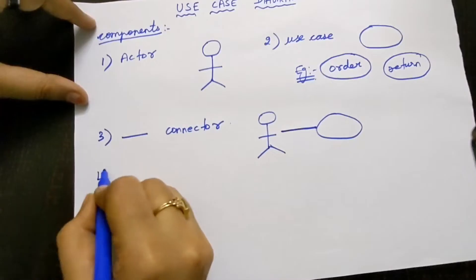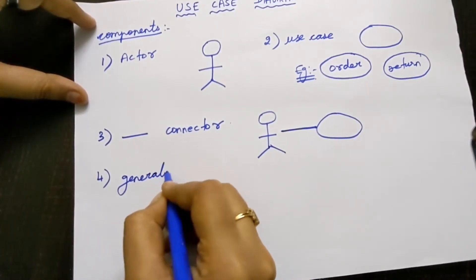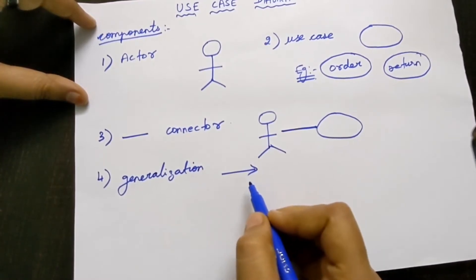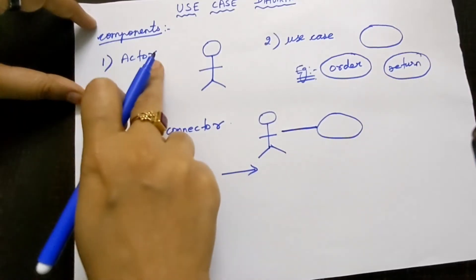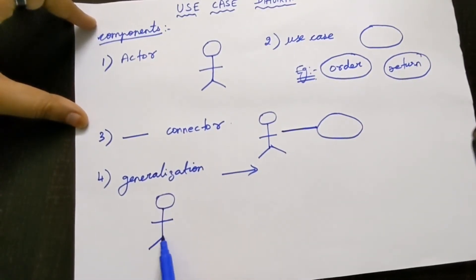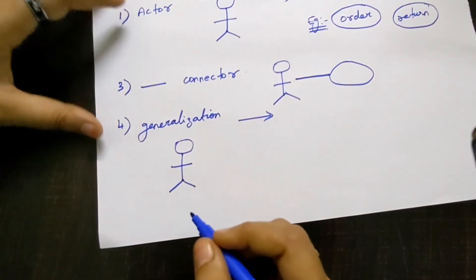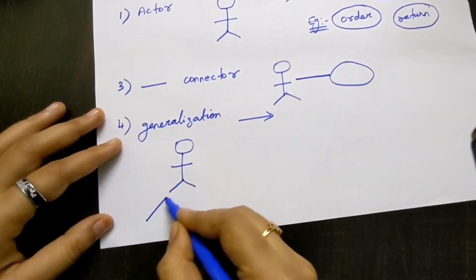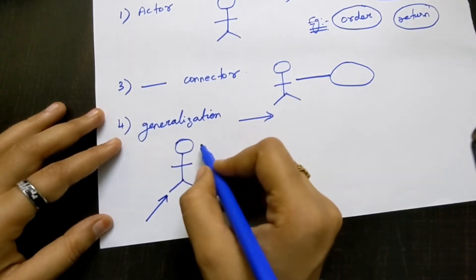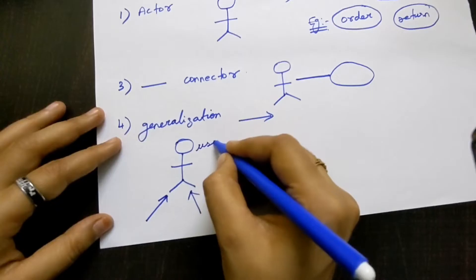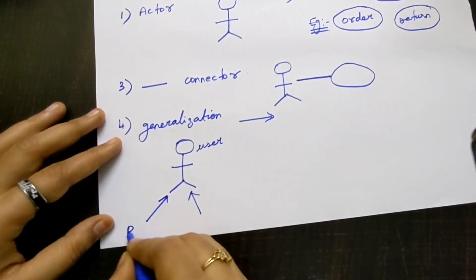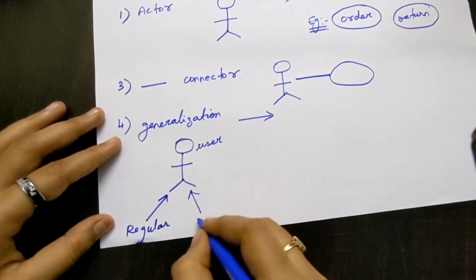The next component is generalization. The symbol for this is a one-sided arrow mark. Generalization means you want to divide an actor further. For example, if the actor is a 'user,' you can divide it further into 'regular user' and 'irregular user.'